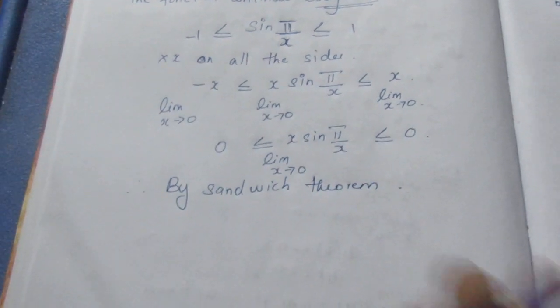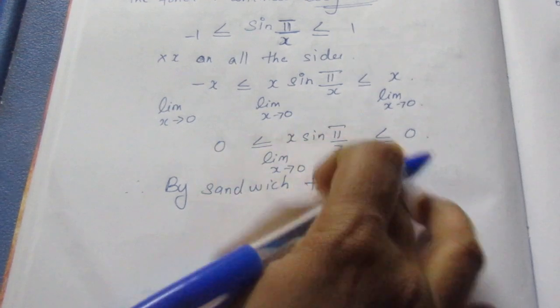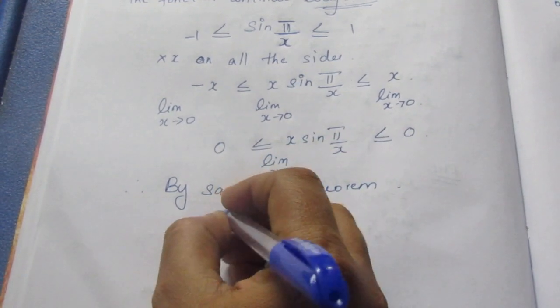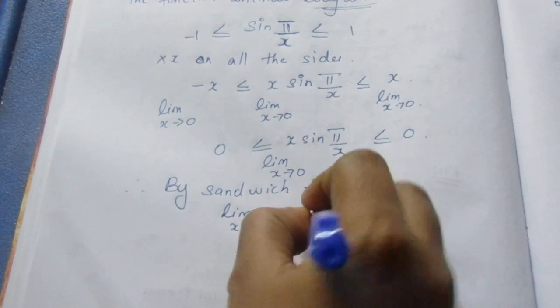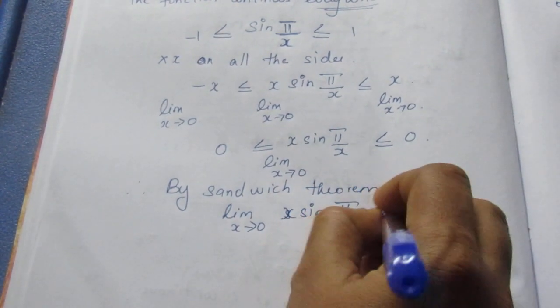By sandwich theorem, we have 0 on both sides. So limit as x tends to 0 of x sin(π/x) equals 0.